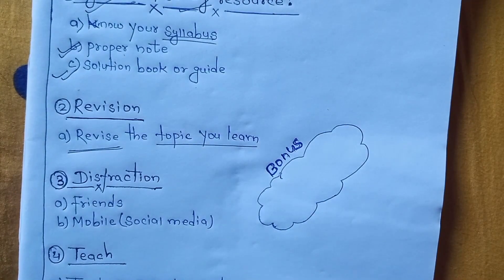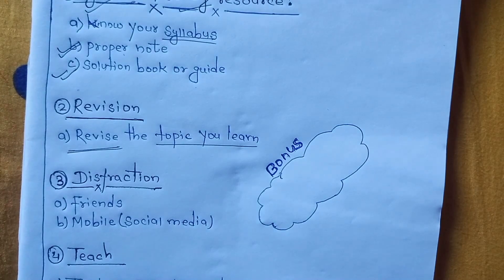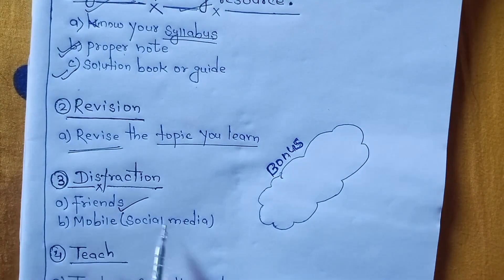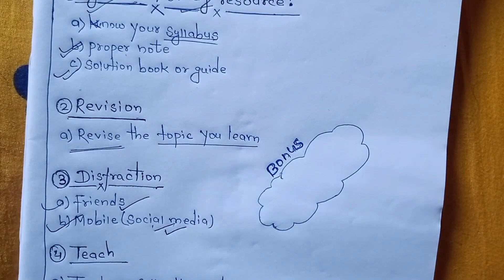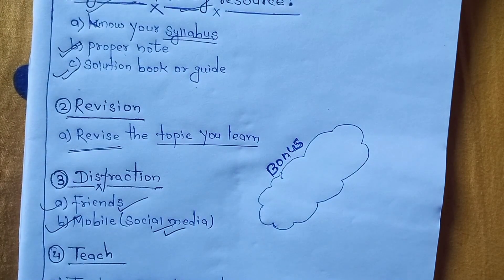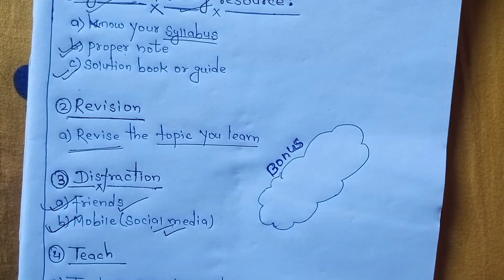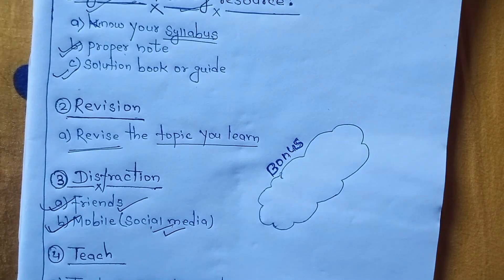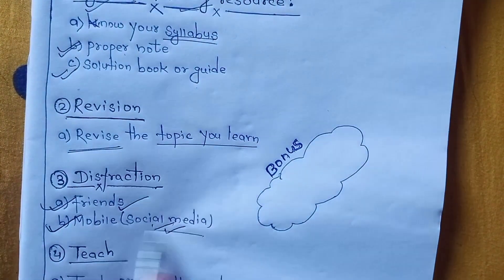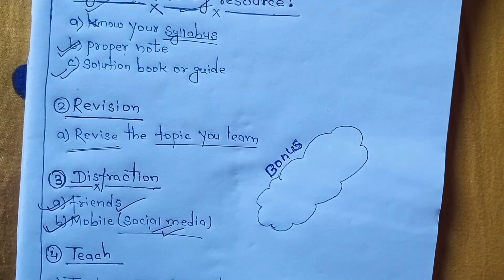The third tip is about distraction — the main problem everyone faces. The first thing is to keep distractions fixed. The other thing is social media friends — social media, you can get into chats and conversations. Social media distractions are too long. Facebook, YouTube, Instagram, Snapchat — these are all distractions.